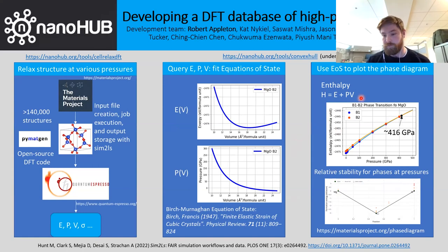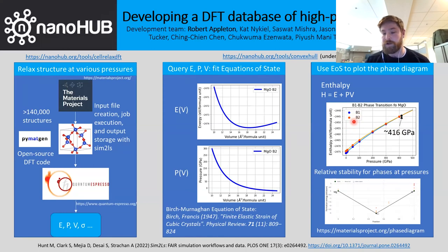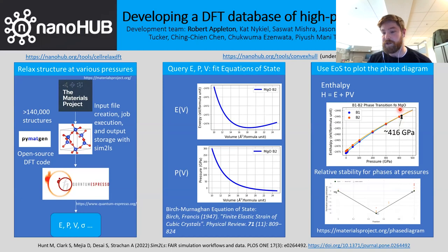What we're showing here is that with a set of calculations on both MgO in the B1 and B2 structure, we can use the enthalpy as a function of pressure to get a prediction of the phase transition.